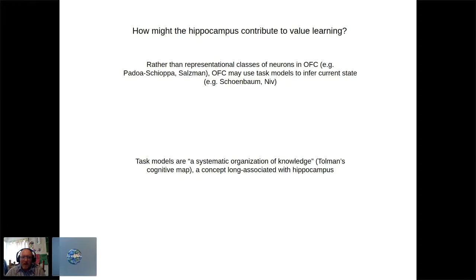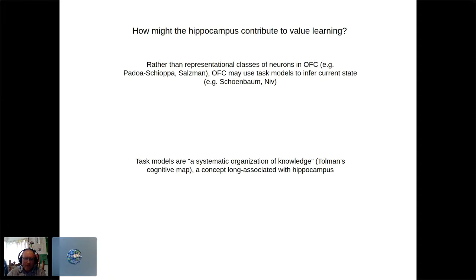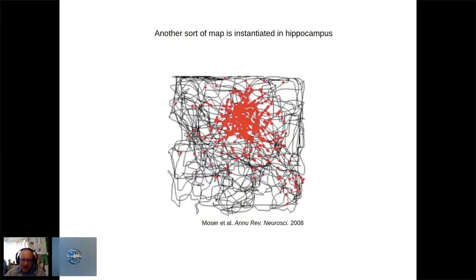In the last part of the talk I'll address what hippocampus is doing at the single-neuron level. Rather than functionally distinct representational classes of neurons in OFC, we think OFC is utilizing a task model — a systematic organization of knowledge, in Tolman's words — a concept long associated with hippocampus. The canonical example is the hippocampal place cell: a rat moving around an environment produces a place field, with spikes tiling the space.